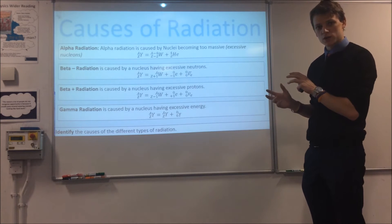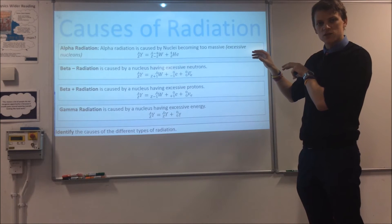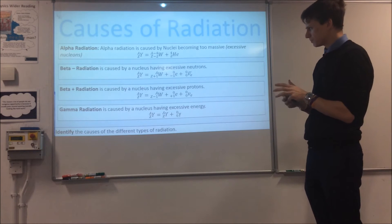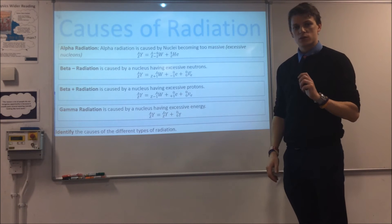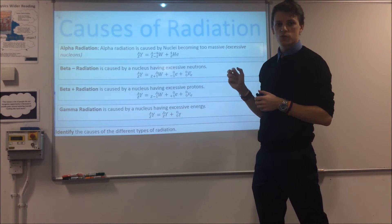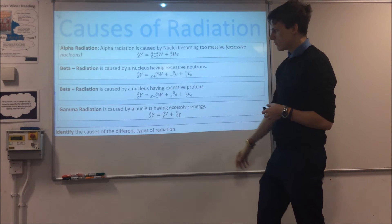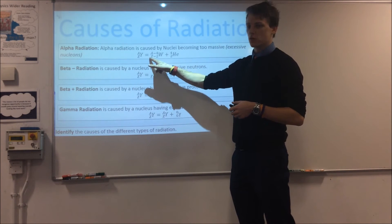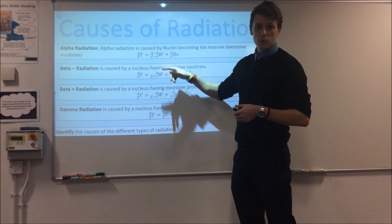Let's look at the general equations for each type of decay, as it's important to use these in decay chains. For alpha radiation: an alpha particle has two neutrons and two protons — four nucleons and two protons total. So whatever nucleus is produced will be the original minus two neutrons and two protons: the nucleon number goes down by four and the proton number goes down by two.